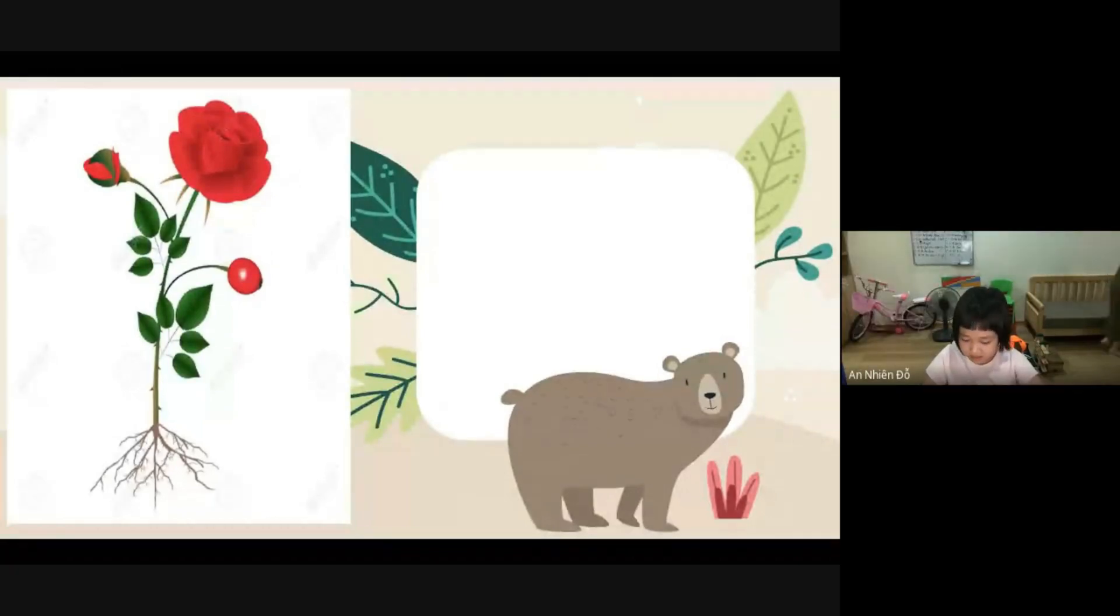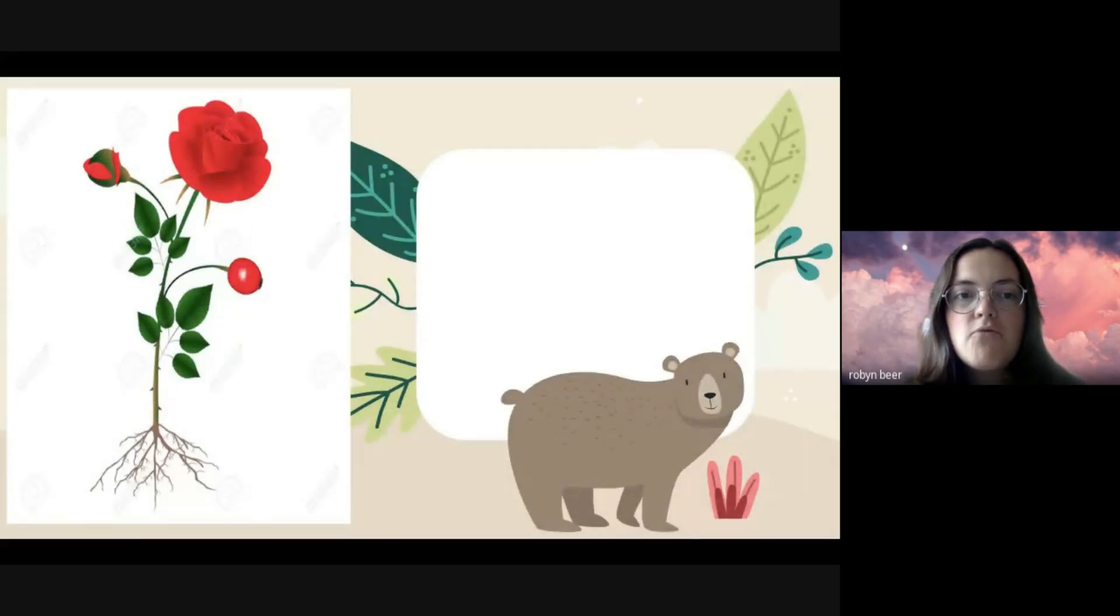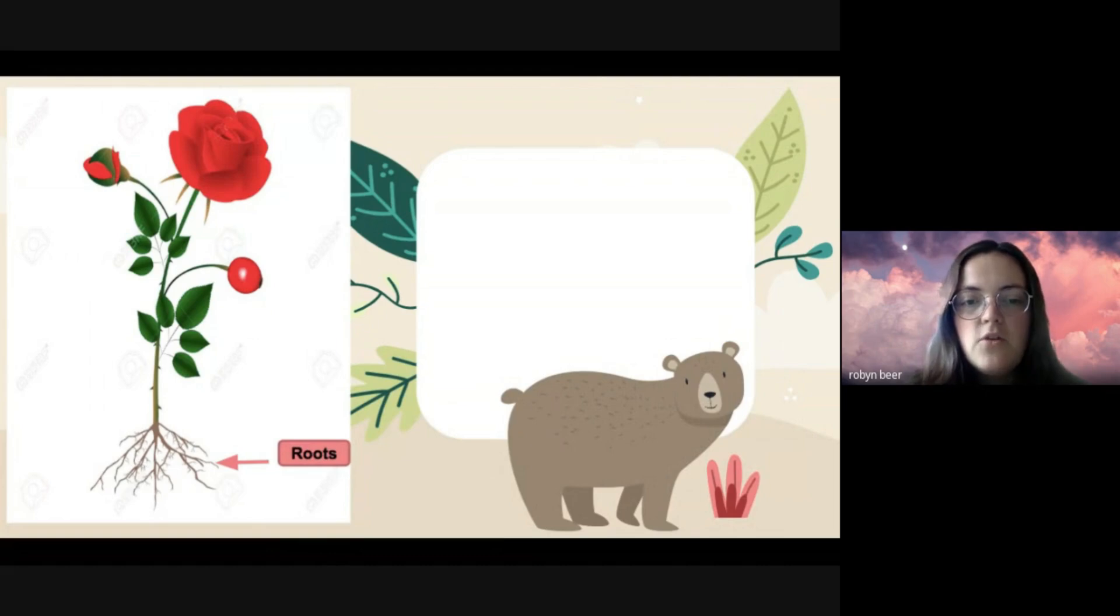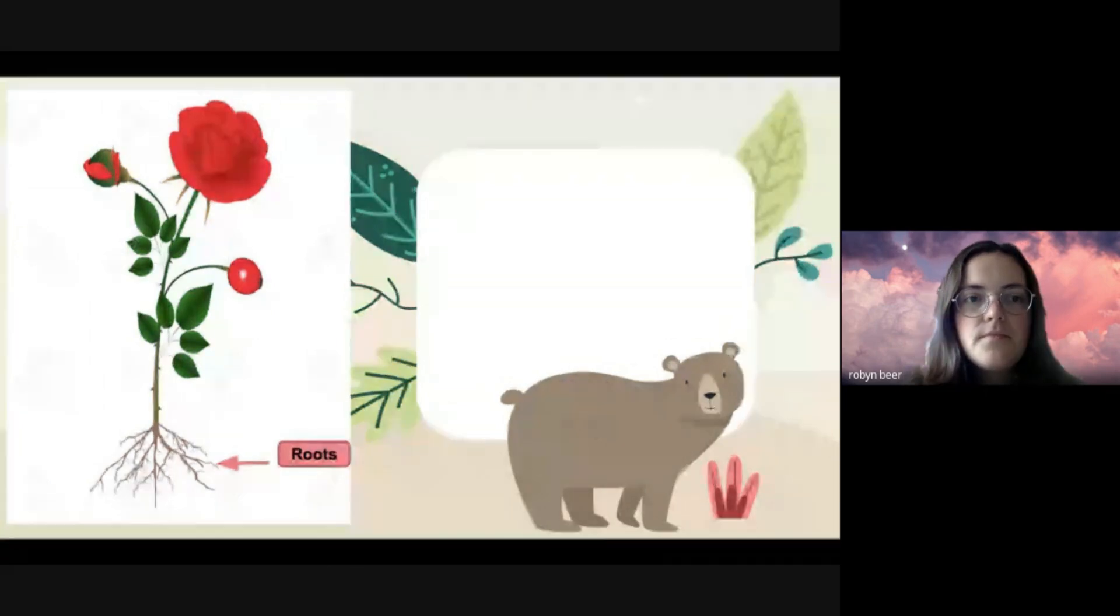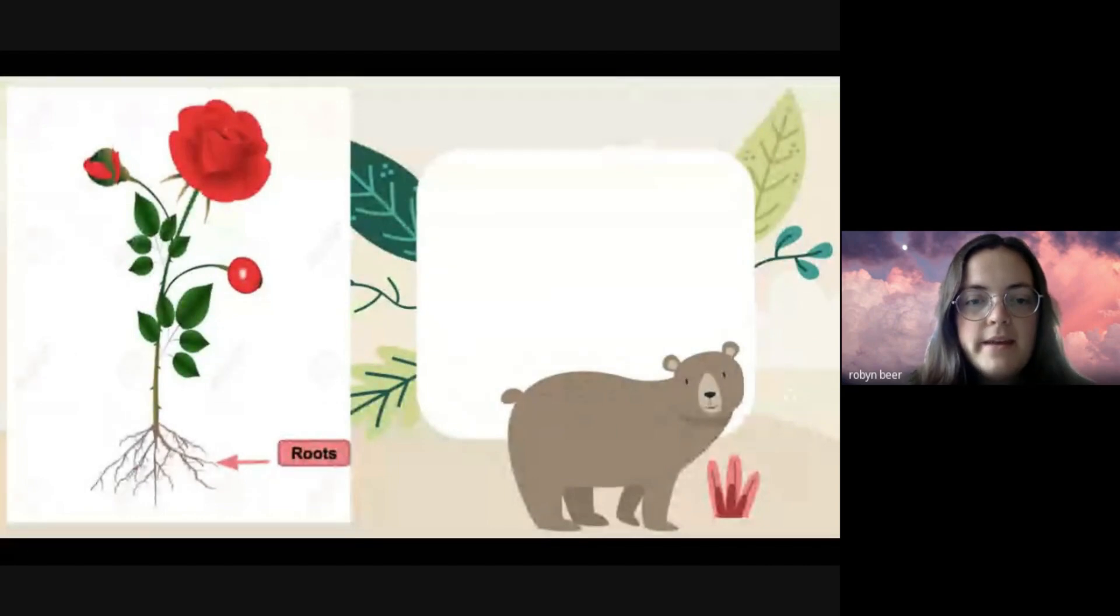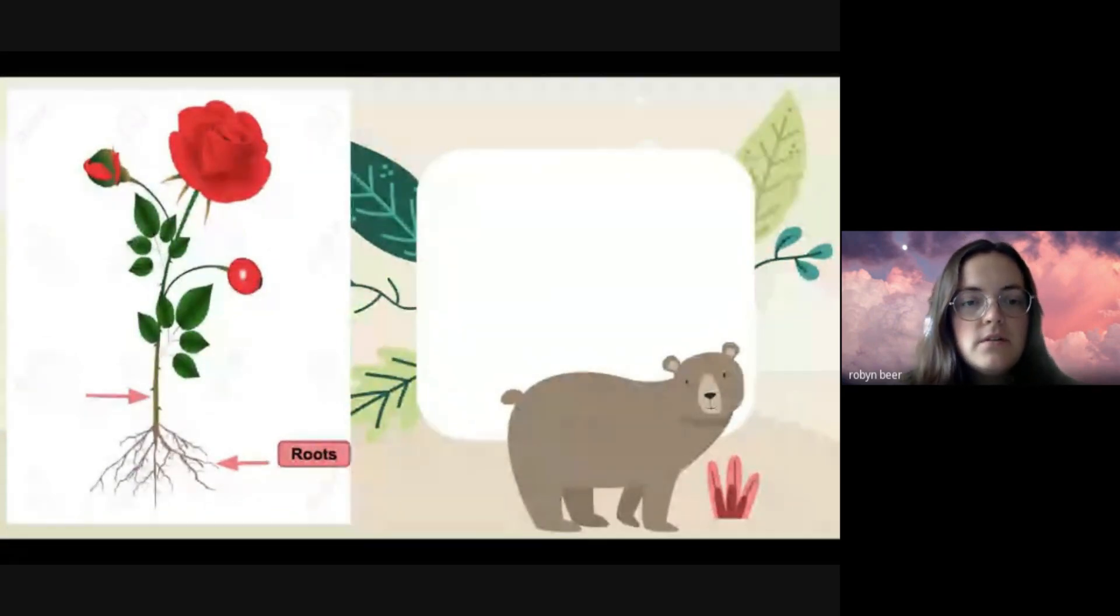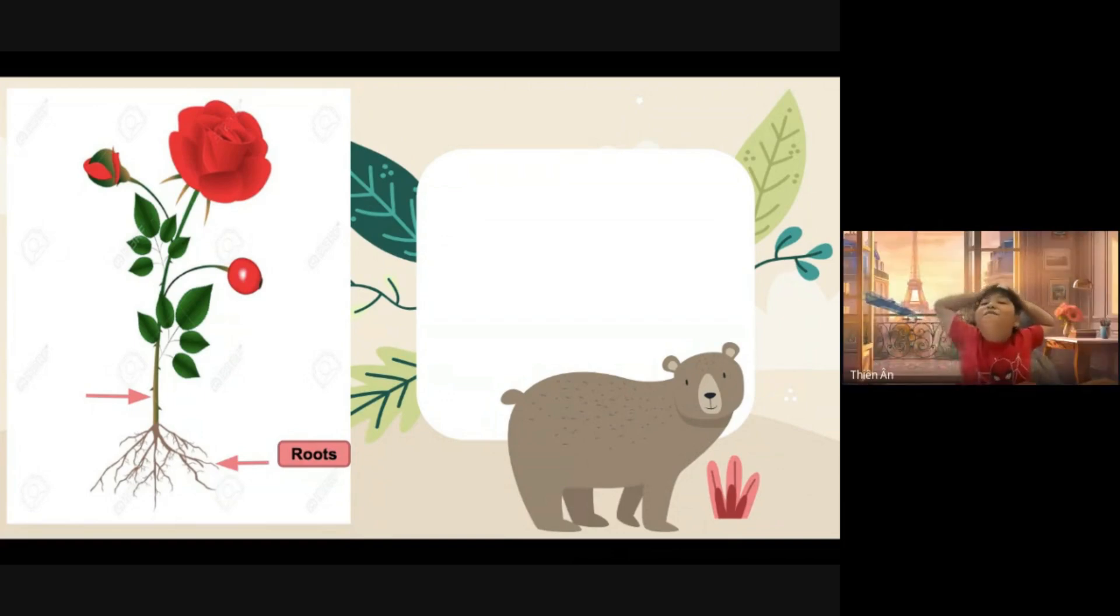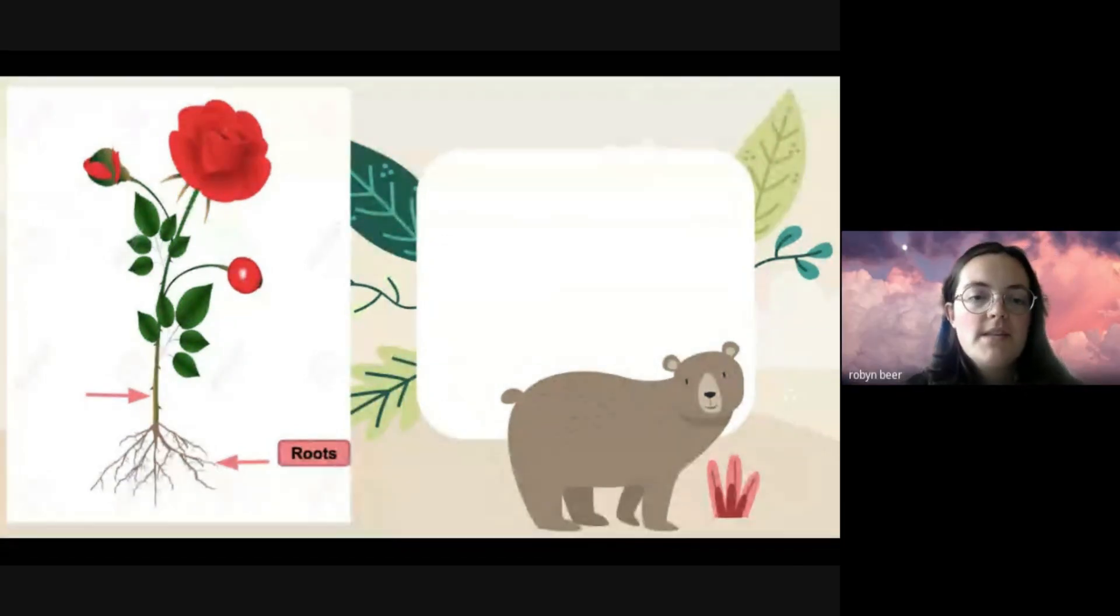Okay, so we have our rose. Let's see what they say about the rose. At the bottom we have our roots. Then we have, does anyone know what this part is? The long part. Let's say a stem. Good TNN, roots and then our stem.